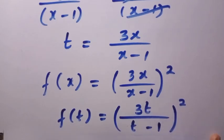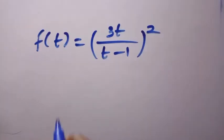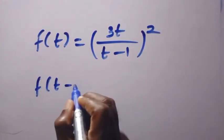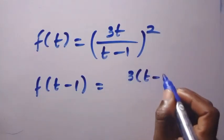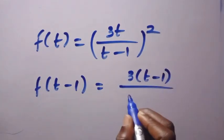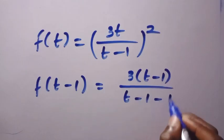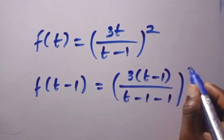let's see how we can get f of t minus 1. This is the simplest part. Let's just change t to t minus 1, and we will expand. So, by changing t to t minus 1, we are going to have 3 into bracket of t minus 1 divided by t minus 1 minus 1 raised to the power of 2.